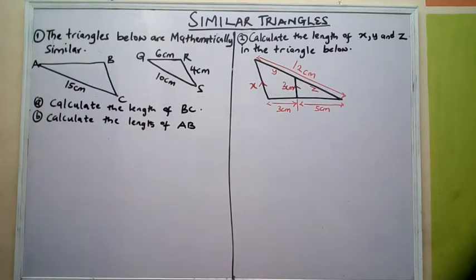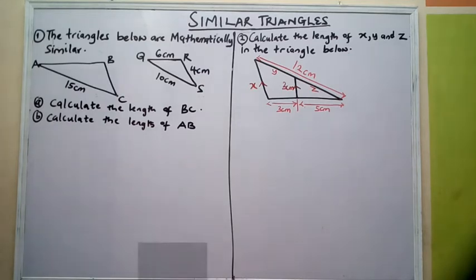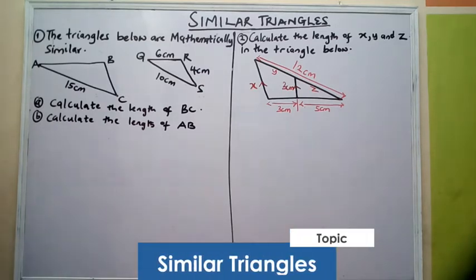Today we will be looking at similar triangles. What are similar triangles? Two triangles are said to be similar if one of them is an enlargement of the other.